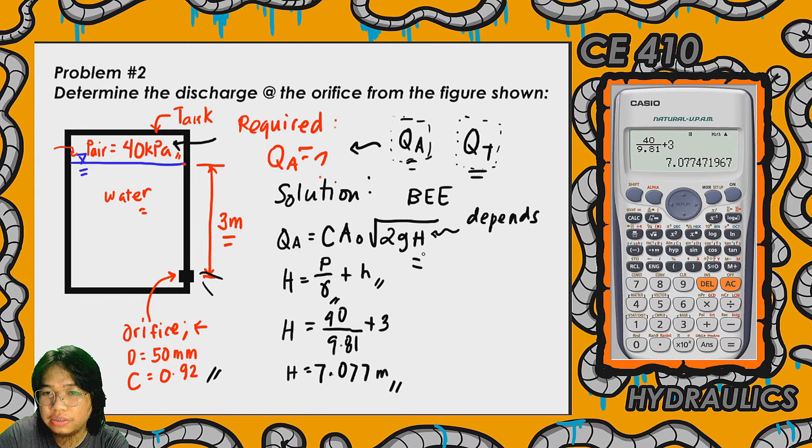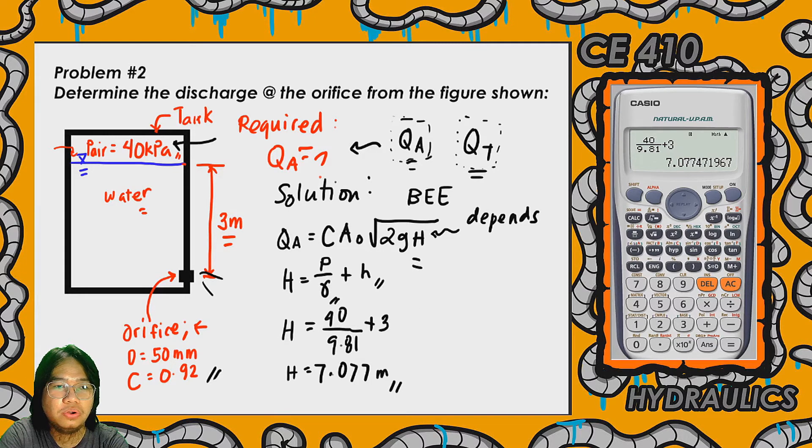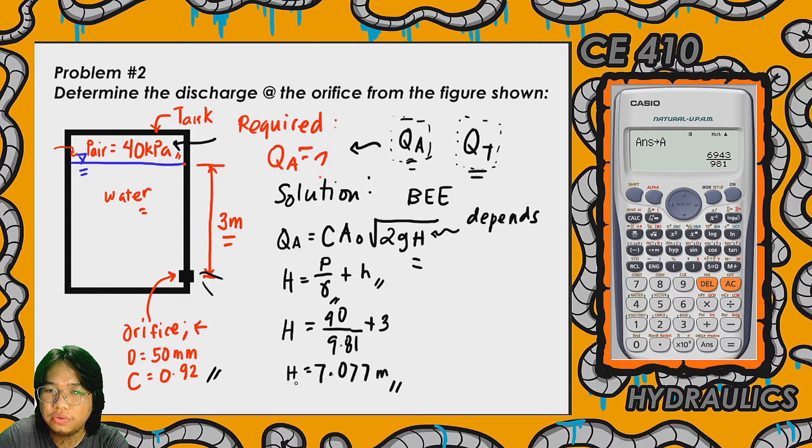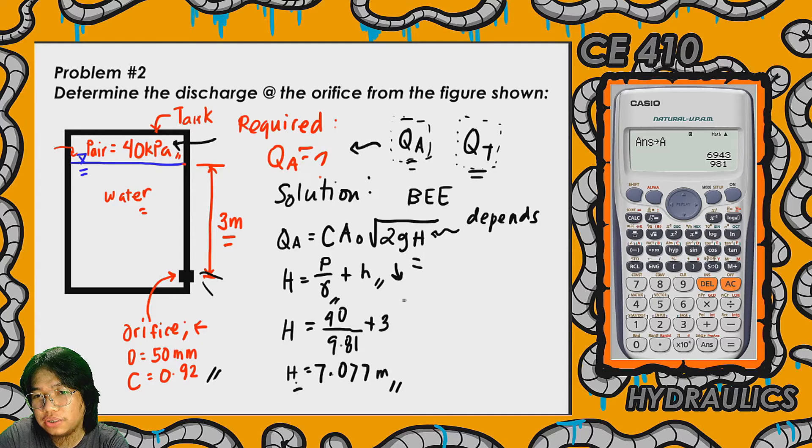So now since we're gonna be using this on this formula, let's store this value in the calculator at A. So shift store, then store that to A. Next we plug in this value on our working equation, so that's Q sub a.